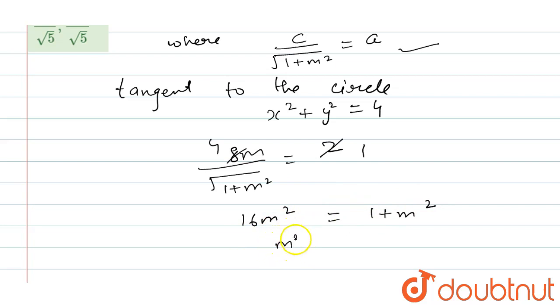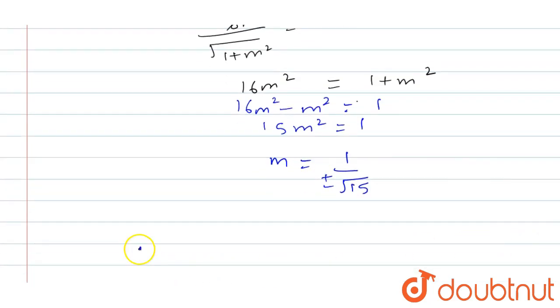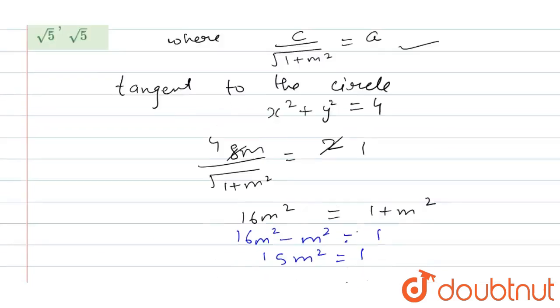Wait, solving correctly: 16m² = 1 + m², so 16m² - m² = 1, which gives 15m² = 1. Therefore m² = 1/15, so m = ±1/√15. The positive and negative values give the answer in the options.